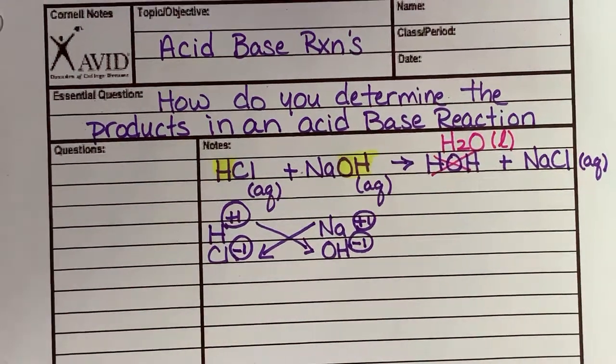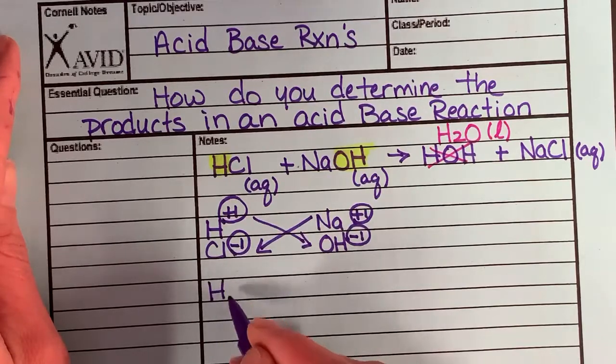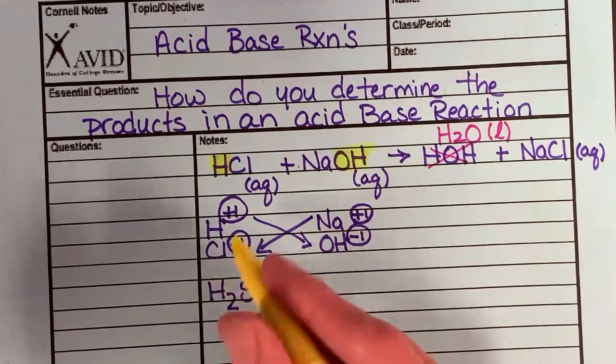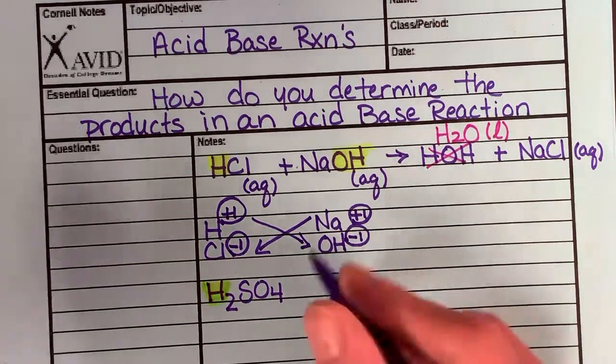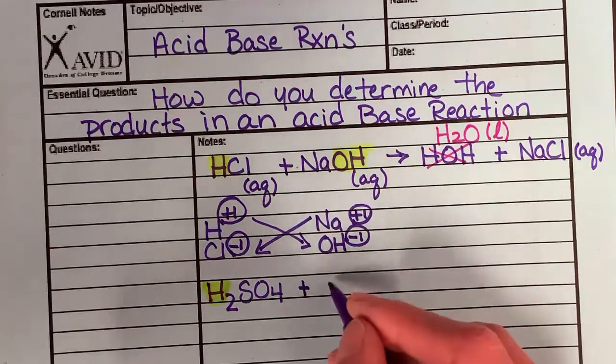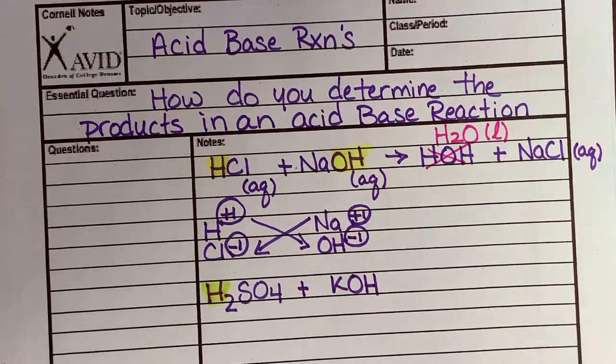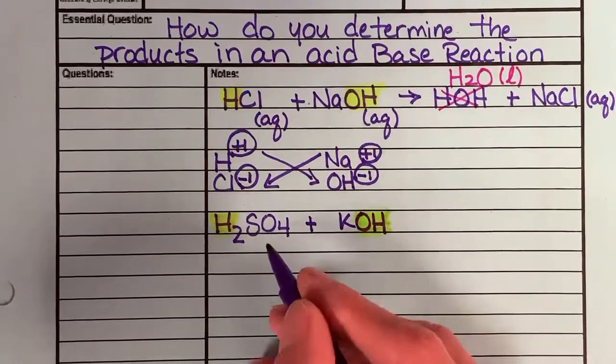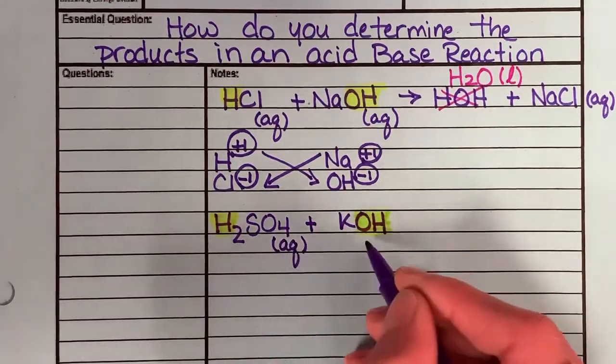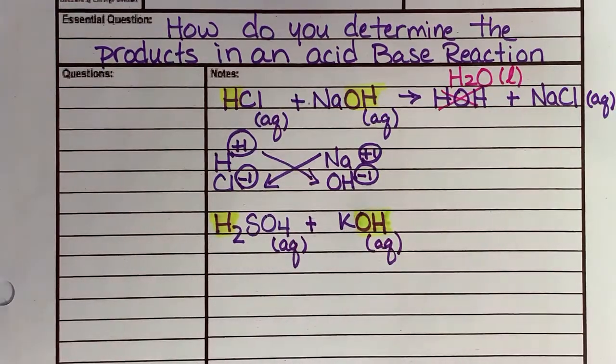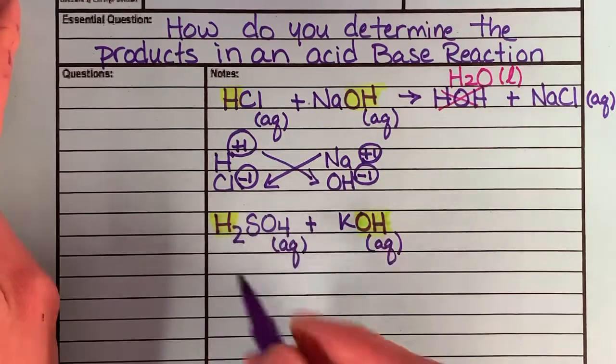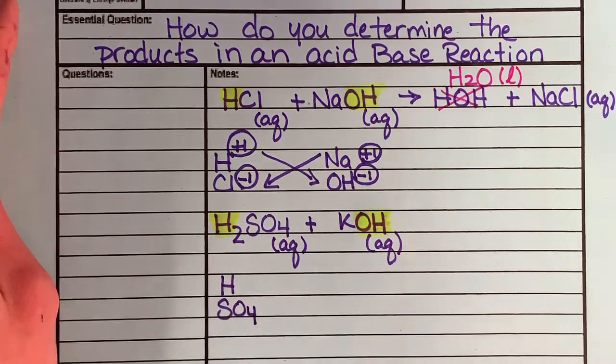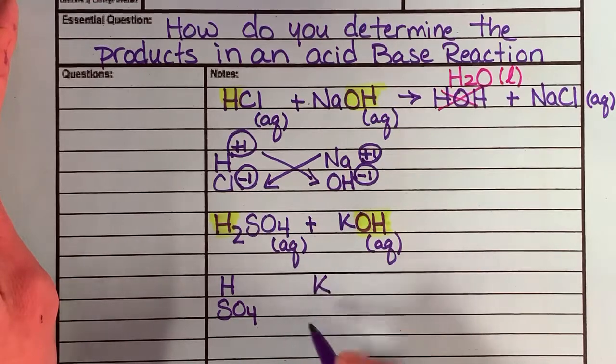Let's look at one that's a little bit trickier. Let's say I have H2SO4. I know he's an acid because he starts with H. And let's say he reacts with potassium hydroxide. I know he's a base because he ends in OH. Both of my reactants are going to be aqueous. Because it's an ionic compound, I can break them apart. So H2SO4 is going to break into H and SO4. KOH is going to break into K and OH.